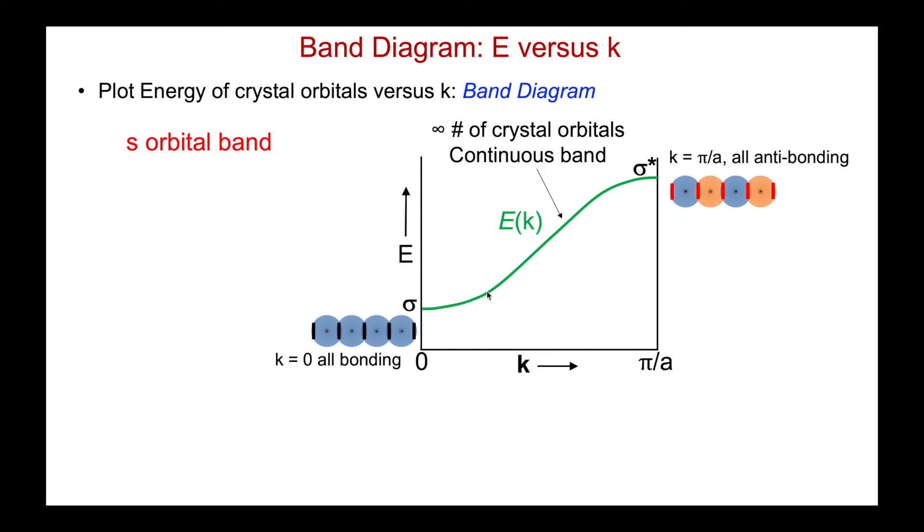And along this line, we have to imagine then that there's all of these possible k-value crystal orbitals, an infinite number of them. So this is my continuous band of levels. One example is halfway up, or at a k value of π over 2a. That's what we've already seen as our non-bonding crystal orbital. So that's just one of this infinite number of levels between the two extremes.